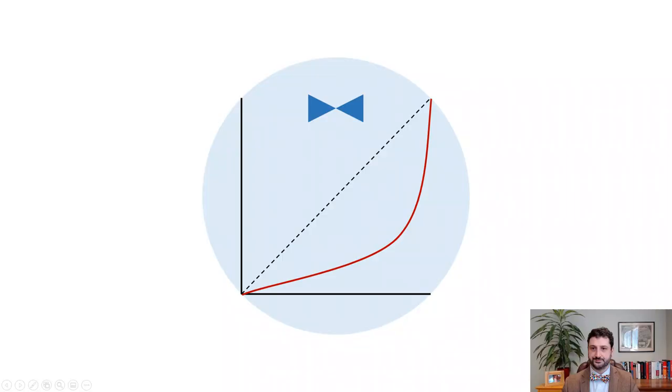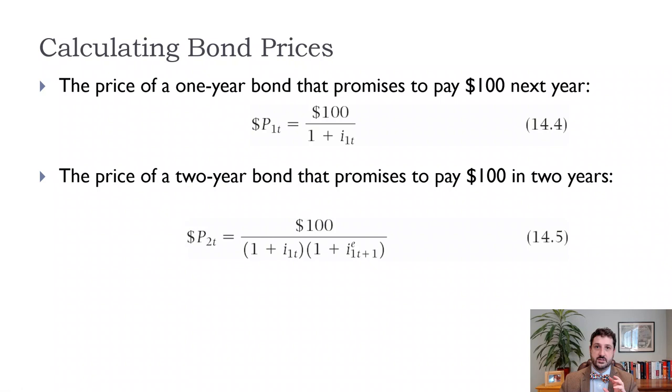In this video, we're going to talk about how to calculate the price of bonds and think about how that's related to the interest rate. This is very similar to the calculation in the first video of this chapter where we talked about calculating expected present discounted value, which makes a lot of sense. We're going to focus mostly on discount bonds as opposed to coupon bonds, just because the math is a little bit simpler.